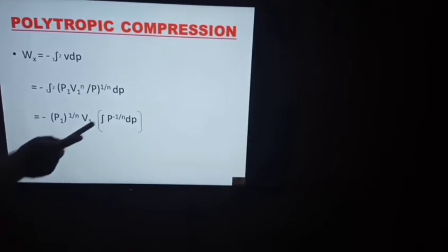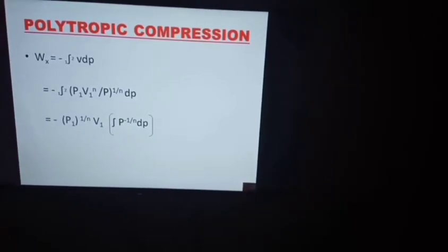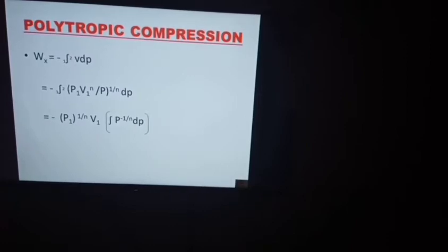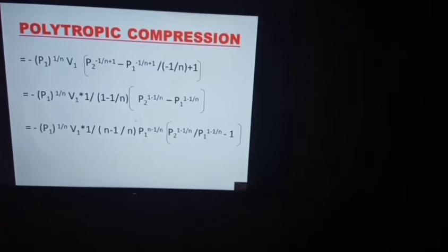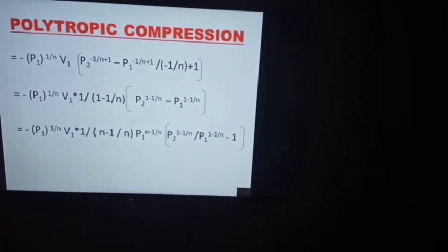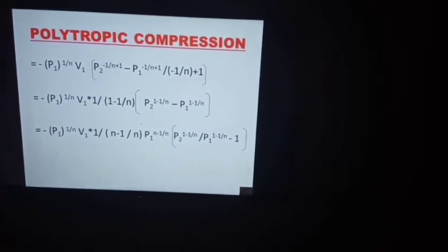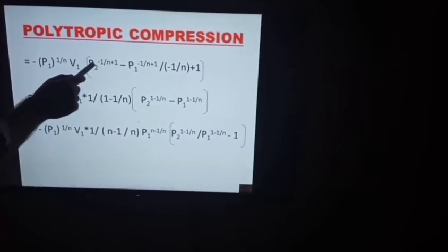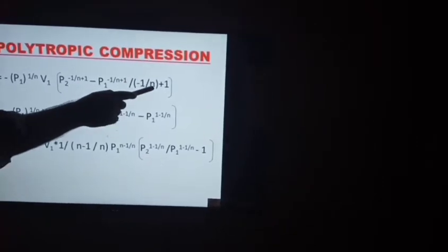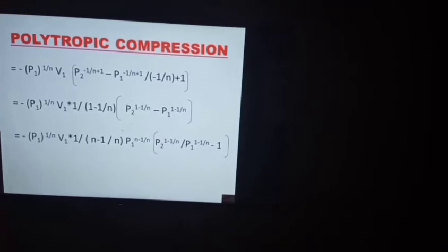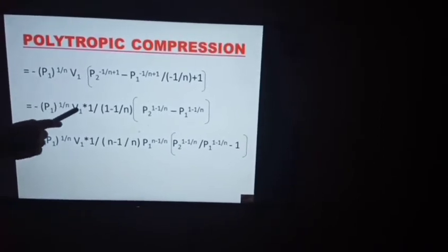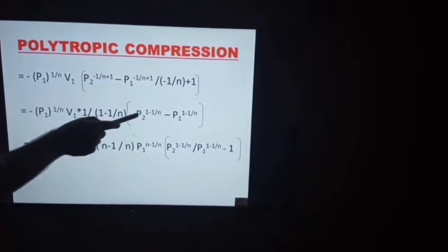Applying the integral formula — integral of x^N equals x^(N+1)/(N+1) — and applying the limits 1 and 2, we get: minus P1^(1/N) times V1 times [P2^(−1/N + 1) minus P1^(−1/N + 1)] divided by (−1/N + 1). Then we bring the denominator (minus 1/N + 1) outside the brackets.